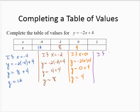And if x equals 2, y would equal negative 2 times 2 plus 4. y would equal negative 4 plus 4. y would equal 0.